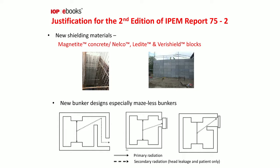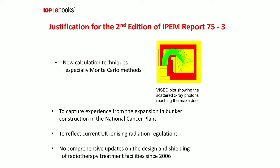Alongside these changes there have been new shielding materials such as high density concrete — magnetite is one example — and precast blocks, which are increasingly popular for creating a bunker more quickly by having all these blocks delivered and then stacking them together. There are also new bunker designs. Often the space is limited in hospital facilities and so it's not always possible to have a long maze, meaning sites are increasingly looking at mazeless bunkers with doors instead. We've tried to cover all those aspects in the empirical calculations, but also recognise that Monte Carlo methods can be used to simulate radiation at different parts around the facility.